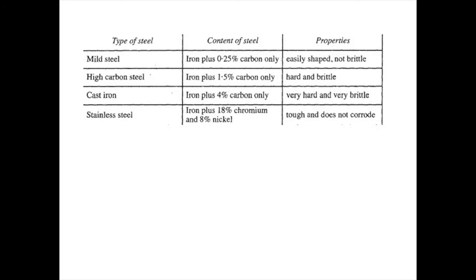The following table shows what happens to the properties of steel when you alter the carbon content. Mild steel has only about 0.25 percent carbon, so it's not brittle and can be shaped. High carbon steel would be very hard but also quite brittle, making it difficult to shape. Adding elements such as chromium and nickel produces stainless steel, which is tougher, doesn't corrode, and doesn't rust, making it useful for certain products.